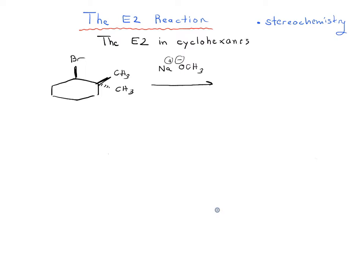So here's another example of an E2 reaction. Hopefully you wouldn't find this one too difficult. If you look at this one, you see that we've got a cyclohexane ring with a bromine on it, and we've got two methyl groups on the carbon next door. And the question is, what is going to be the product of this reaction?